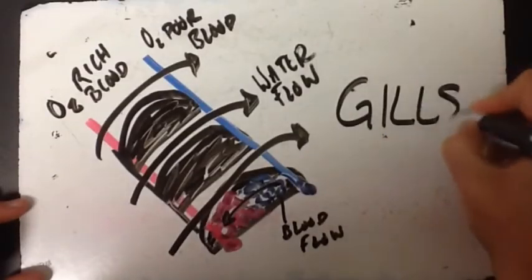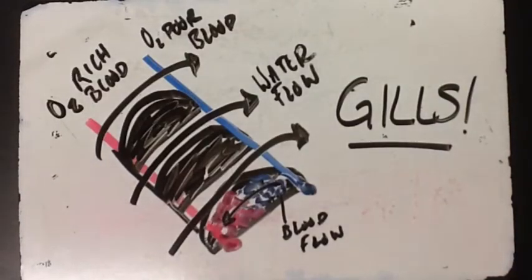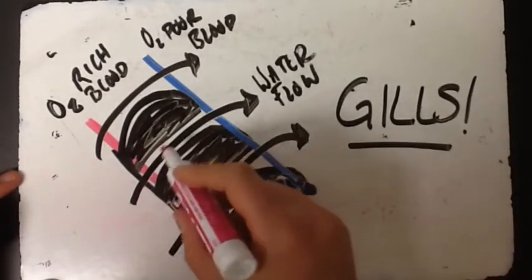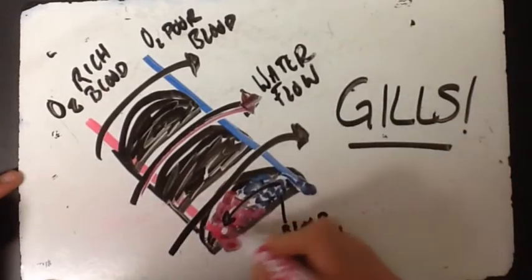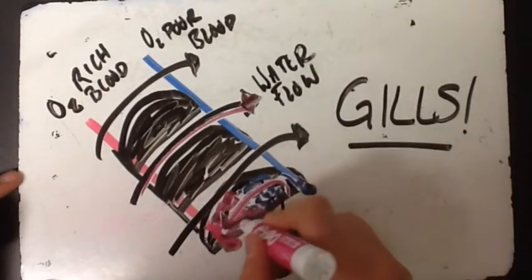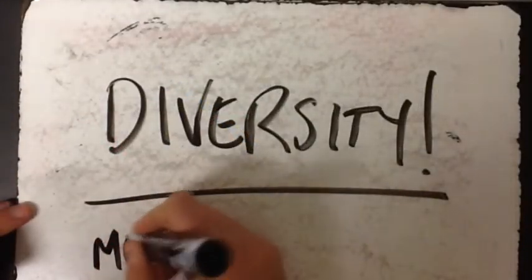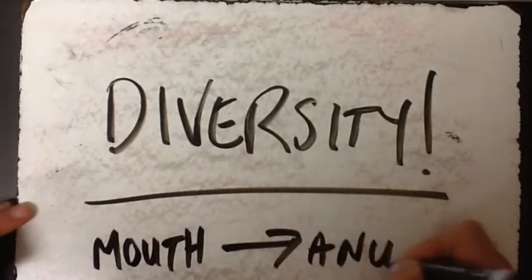Now let's talk about gills. Gills are a major respiratory structure in fish. Oxygen-rich blood gets to all the tissues as water flows over the gills, which filter out what we don't need and take in the oxygen. As far as fish digestion goes, there is huge diversity, but they do have complete digestion going from the mouth to the anus — the tract depends on the feeding method.